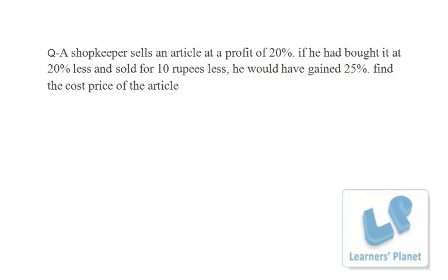Hi, let's solve this problem from profit and loss section. A shopkeeper sells an article at a profit of 20%. If he had bought it at 20% less and sold for 10 rupees less, he would have gained 25%.